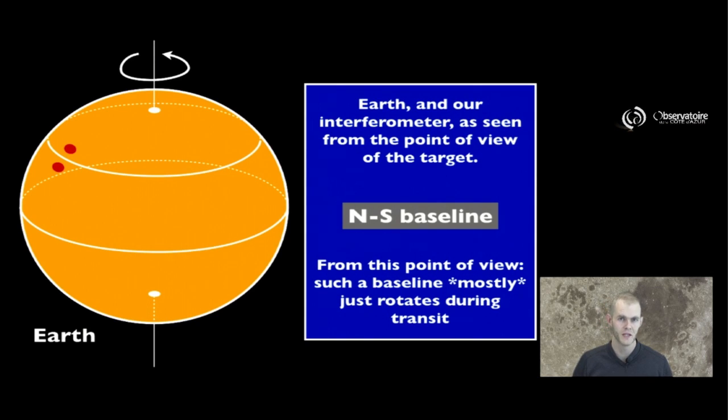I'm going to show you two types of baselines. The first one would be an interferometric baseline oriented in the north-south axis. We're going to place ourselves from the point of view of the star, and instead of seeing the sky move, we're going to look at Earth as it rotates around its axis, and we're going to see the interferometer move along with the surface of Earth. The baseline seems to mostly rotate by a certain amount.